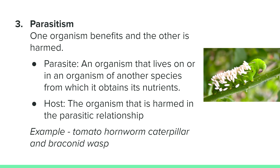Parasitism is a relationship where one organism benefits and the other is harmed. A parasite lives in or on an organism of another species and the host is harmed. An example of this relationship is the tomato hornworm caterpillar and the braconid wasp. The wasp lays eggs on the caterpillar, and when the eggs hatch the larvae eat the caterpillar. This kind of symbiosis can be identified as plus-minus since one benefits and the other is harmed.